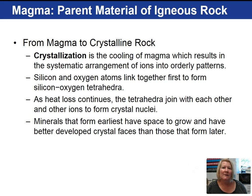The silicon and oxygen link together first to form the silicon-oxygen tetrahedron. Remember, silicate minerals dominate igneous rocks. As the magma continues to cool, the heat loss continues, and the tetrahedra will join with other ions and form crystal nuclei.